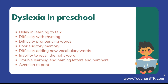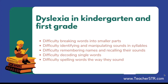Aversion to print, meaning they don't enjoy reading along in a book and they don't enjoy trying to learn the mechanics of reading. For students in kindergarten and first grade, you may notice the following signs: difficulty breaking words into smaller parts or syllables — for example, baseball can be pulled apart into base and ball; difficulty identifying and manipulating sounds in syllables — for example, man sounded out as m-a-n; difficulty remembering the names of letters and recalling corresponding sounds; difficulty decoding single words in isolation; and difficulty spelling words phonetically or remembering letter sequences in very common words — for example, they might write said as S-E-D instead of S-A-I-D.